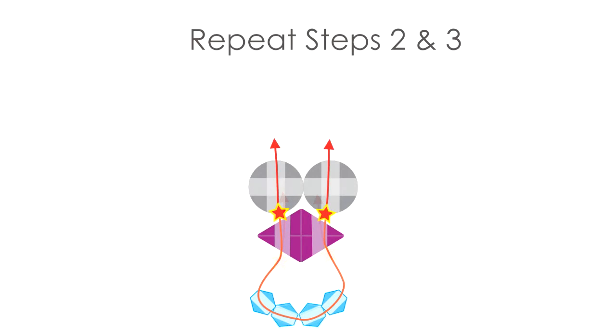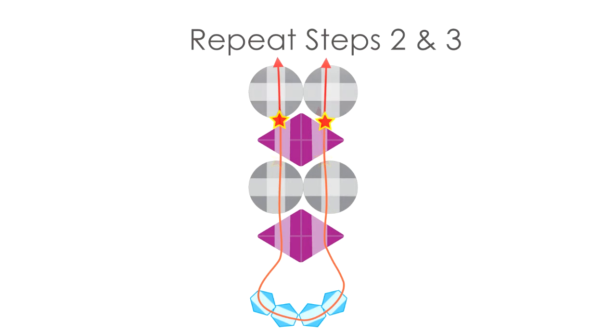Next, you want to continue by repeating steps 2 and 3 until you reach the desired length of your bracelet. A 7 inch bracelet is ideal for an average wrist size.